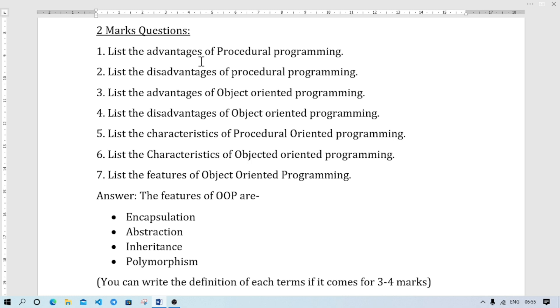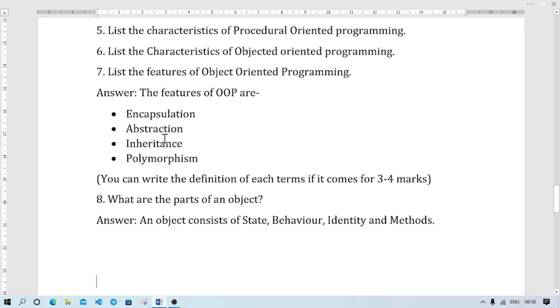Advantages of OOP: at least learn the features of OOP - encapsulation, abstraction, polymorphism, inheritance. You can write the definition of each term if it comes for three-four marks. What are the parts of an object? Object parts are state, behavior, identity, and method.